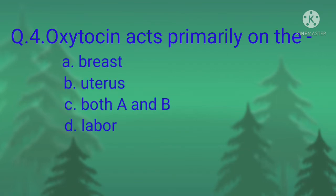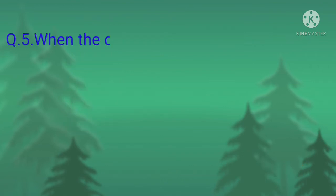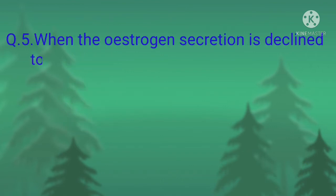Question number four: oxytocin acts primarily on which of the following? Option A, breast; option B, uterus; option C, both A and B; option D, labor. The correct option is option C, both A and B — that means oxytocin acts primarily on the breast and uterus.